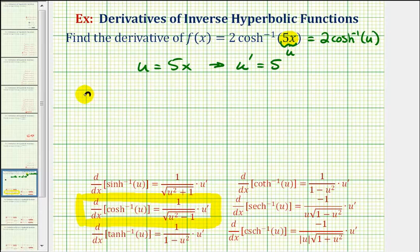Which means our derivative function, f prime of x, is going to be equal to two times the derivative of inverse hyperbolic cosine u, which is equal to one divided by the square root of u squared, where u is five x, minus one, times u prime, which we already found is five.